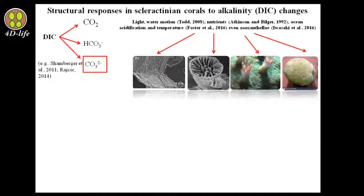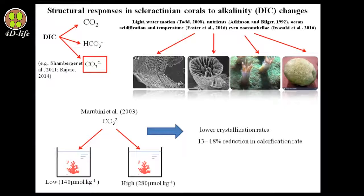According to many studies, dissolved inorganic carbon is the most important parameter for coral calcification. Moribini et al. in 2003 used two different carbonate ion concentrations — a low amount of 140 micromole per kilogram and a high amount of 280 micromole per kilogram — to examine the effect of carbonate ion concentration on crystallization of hermatypic corals. They investigated skeletogenesis quantitatively as a calcification rate and qualitatively, using different hermatypic coral species in the two carbonate environments. Results showed that at low carbonate concentration, corals had lower crystallization rates, with a 13–18% reduction in the calcification rate.